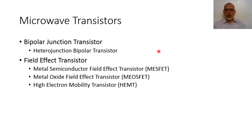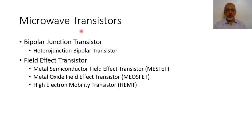Welcome everyone. In the previous videos we discussed microwave diodes as simple microwave devices. Now we are going to discuss microwave transistors as another type of microwave device. Generally speaking, microwave transistors can be classified mainly into two types: bipolar junction transistors and field effect transistors.